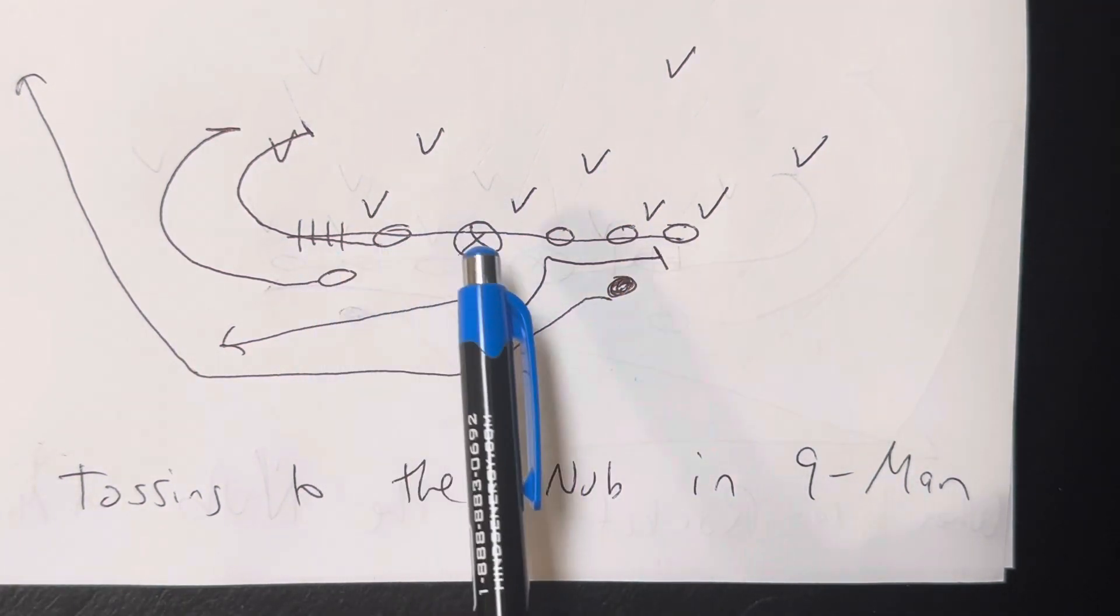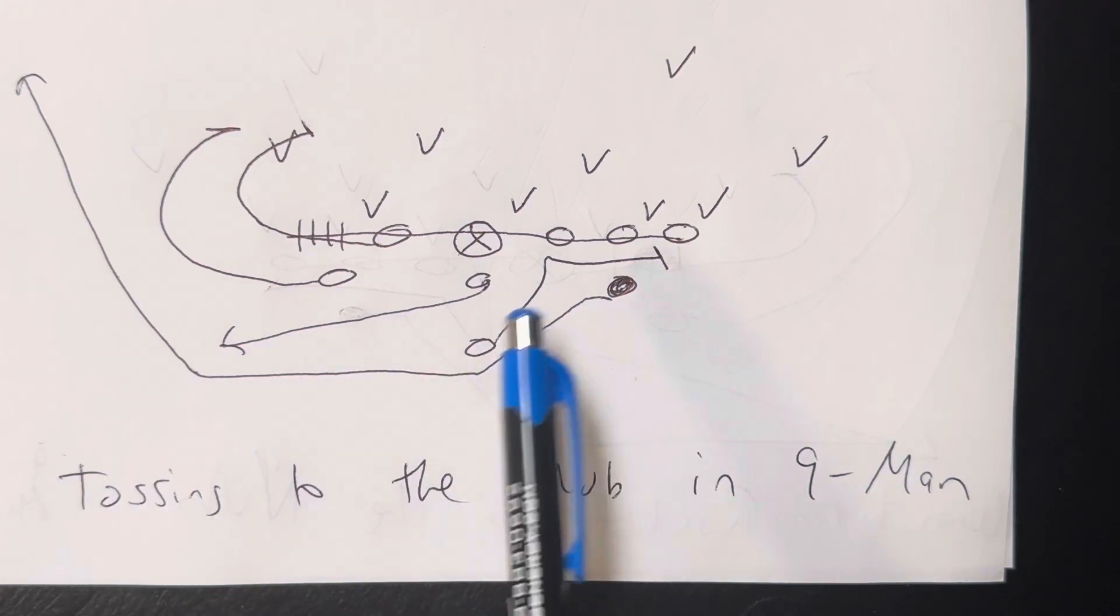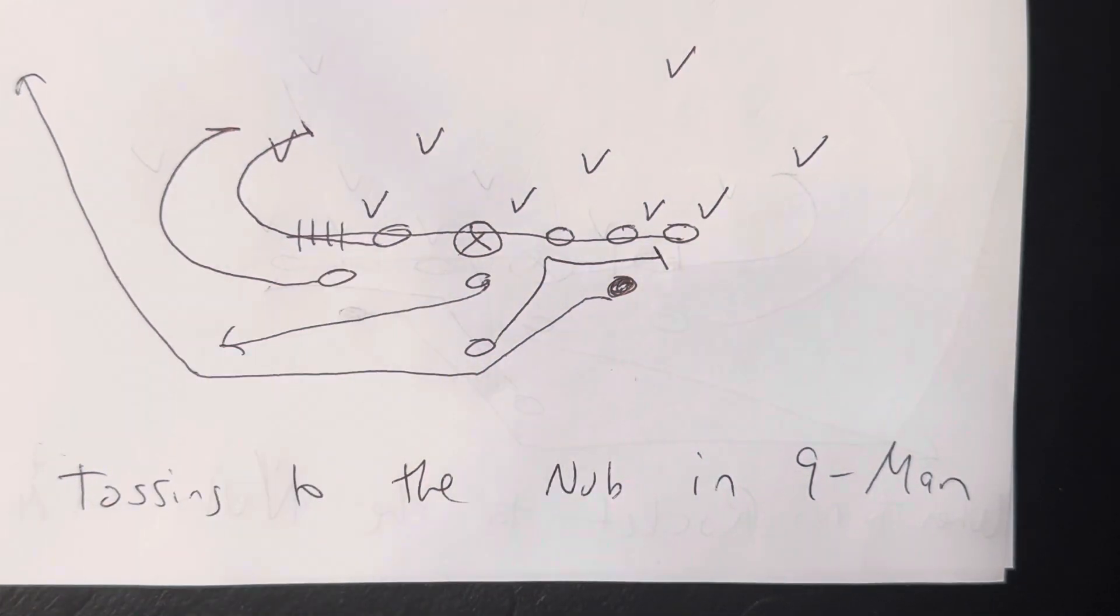You've got one, two, three and a half on one side, and five and a half on the other side. So if there's three or fewer defenders to the nub, that's when you want to toss the ball to the nub to take advantage of the lack of numbers, because you've got three and a half to their three. And now it's time to toss the ball.